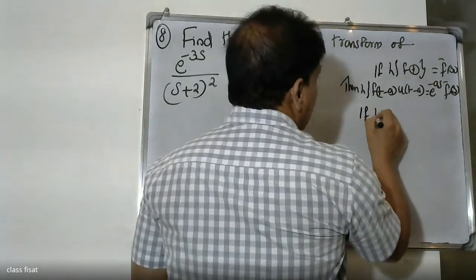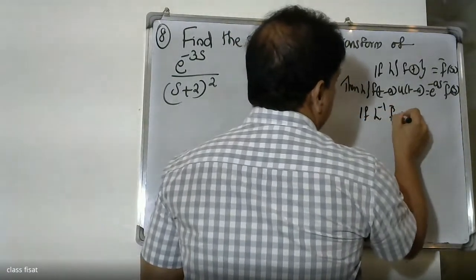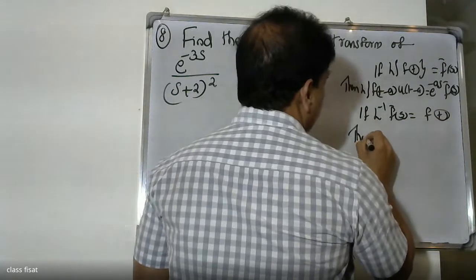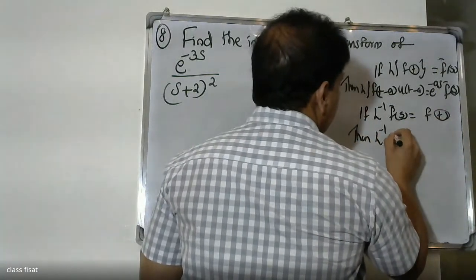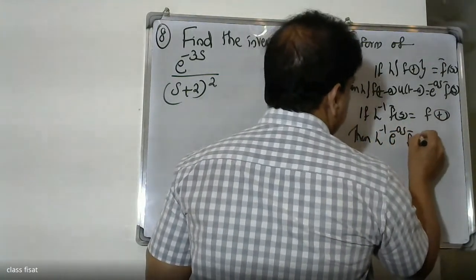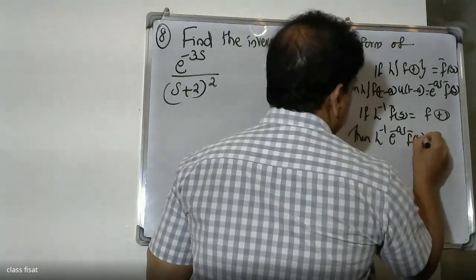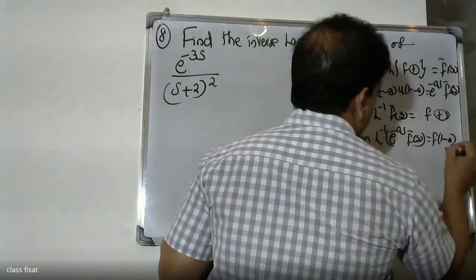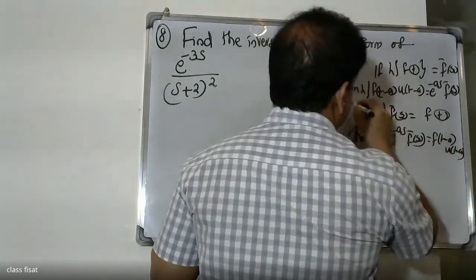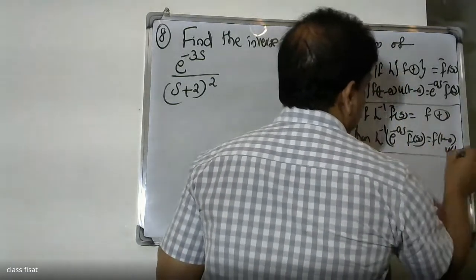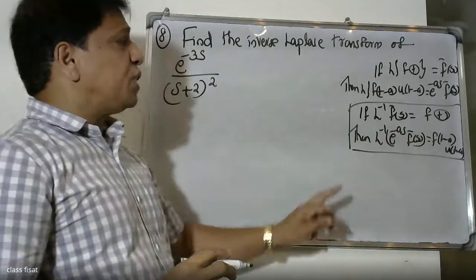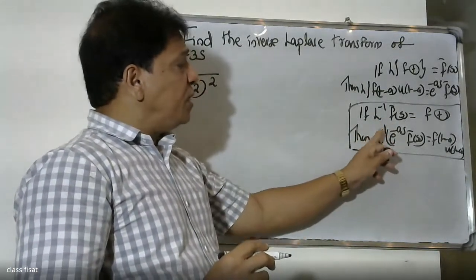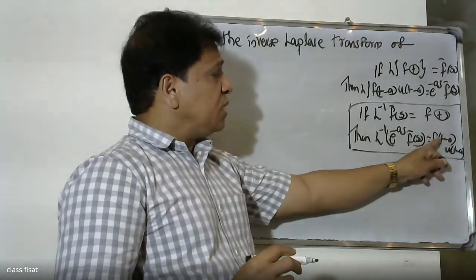Putting the inverse on both sides of the second shifting property: if L inverse of F̄(s) equals f(t), then L inverse of e raised to minus as times F̄(s) equals f(t minus a) into u(t minus a). So L inverse of e raised to minus as times F̄(s) equals F(t minus a) into u(t minus a).